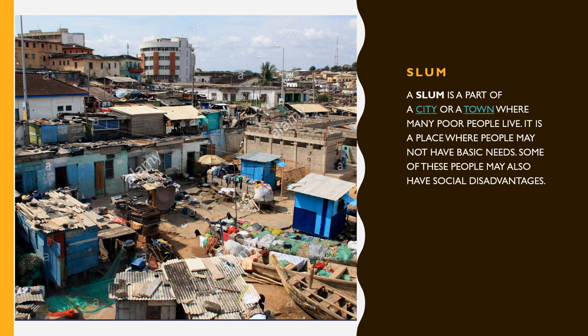Let us take a look at this picture. This picture is an example of a slum. Imagine walking around Accra and seeing a place like this — it destroys the beautification of the city. A slum is a part of a city or town where many people live, but these people are classified as poor because they do not have the basic needs, and some also have social disadvantages.